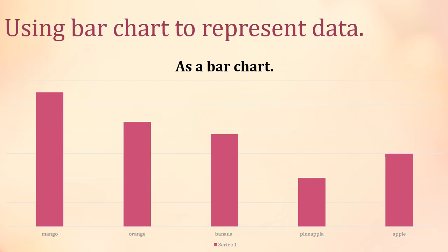Next on our slide is using a bar chart to represent data. All these shapes you see here are called bars. We are still using the same mango, banana, orange, pineapple, and apple data. The longest bar represents the one with the highest likes — mango, with 20 pupils. The next longest bar is orange with 18 pupils, followed by banana.